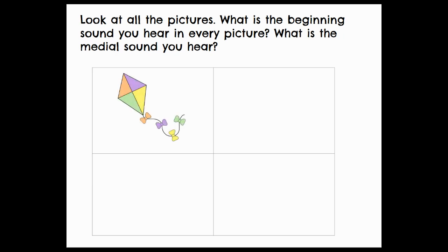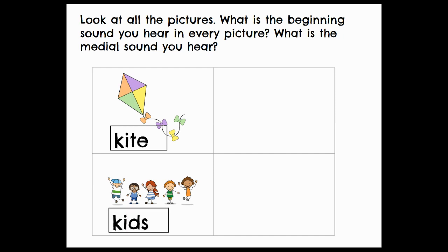Let's take a look at how we spell these words. So I have kite. What do you notice about that beginning sound in kite? K-I-T-E. Interesting. Let's look at kids. Kids. K-I-D-S. Wowzers.